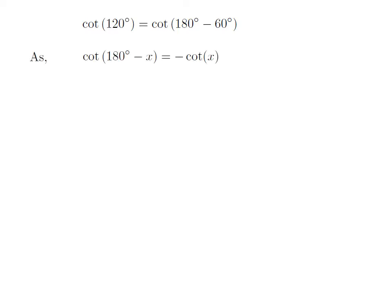As we know, the trigonometry identity cotangent of 180 degrees minus x is equal to minus cotangent of x.